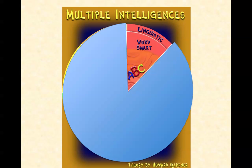The second intelligence is linguistic, meaning using words effectively. These learners have highly developed auditory skills and often think in words. They like reading, playing word games, and making up poetry or stories. They can be taught by encouraging them to say and see words and read books together. Tools for linguistic learners include computers, games, multimedia, books, tape recorders, and lectures.